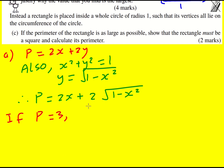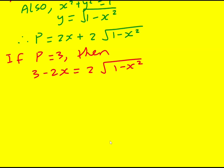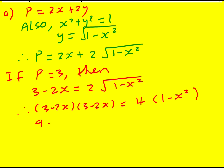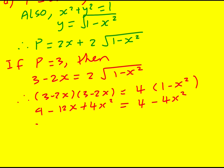If p equals 3, then 3 minus 2x equals 2 times the square root of 1 minus x squared. I've created an equation with a root on one side so now I can square it. Squaring the left side gives a double bracket, and squaring the right side eliminates the square root. This gives 9 minus 12x plus 4x squared equals 4 minus 4x squared. We've turned it into a quadratic: 8x squared minus 12x plus 5 equals 0.